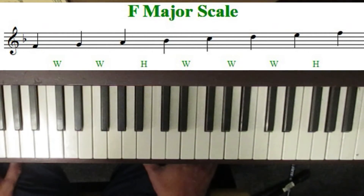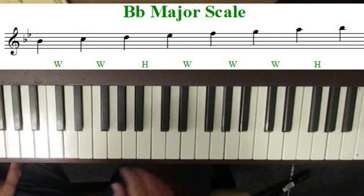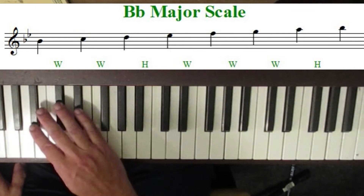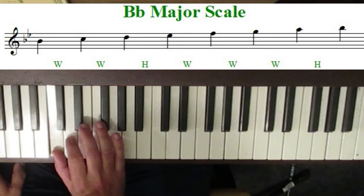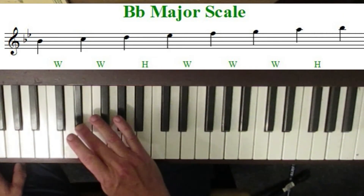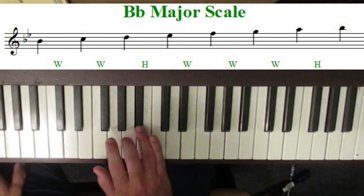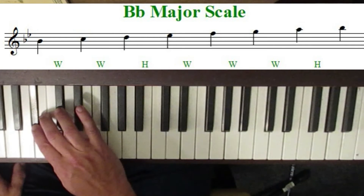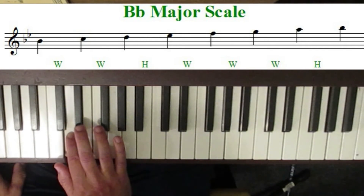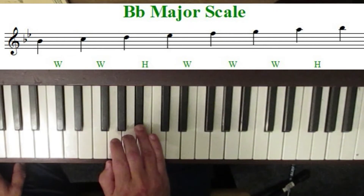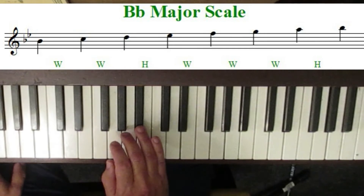Now the rest of the flat keys all have the flat after their letter. Let's talk about the key of B flat major. B flat, whole step to C, whole step to D, half-step to E flat, whole step to F, whole step to G, whole step to A, half-step to round it off to B flat. So the key of B flat has two flats in it: the B flat and the E flat.